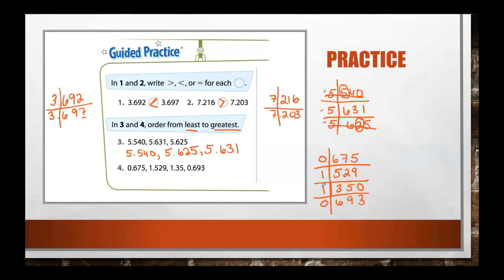Let's take a look. In the ones place we have zero, one, one, zero — which is lower, the zeros or the ones? The zeros. So we ignore the two ones and focus on the zeros. Those two numbers have six and six in the tenths place — the same — so we move right. Now we have seven and nine. Seven is lower, so our first number is zero and six hundred seventy-five thousandths. Cross that off. Now we have ones, ones, and zero — so zero and six hundred ninety-three thousandths is our next number.